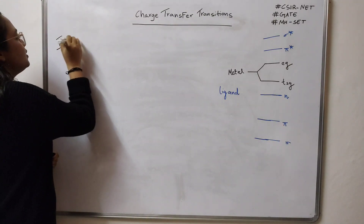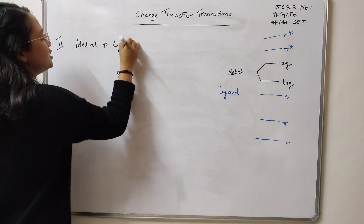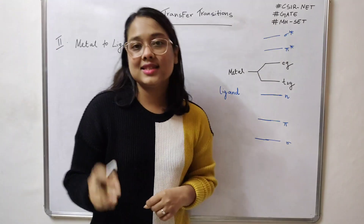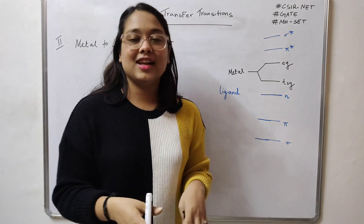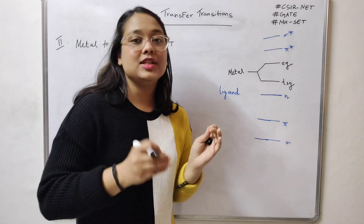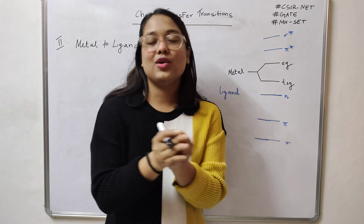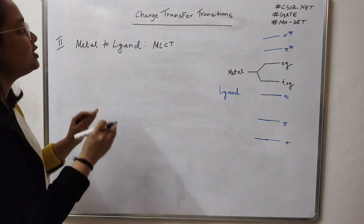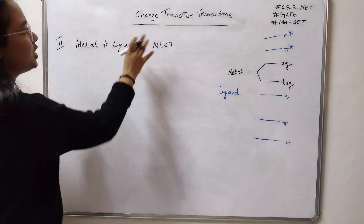We will now talk about metal-to-ligand charge transfer transitions, known as MLCT. In the previous video I discussed LMCT — I'll put the link in the description, so watch that first and then come back. Here I'm going to focus only on MLCT. In order to classify any complex under metal-to-ligand or ligand-to-metal, there are a few requirements we need to know.